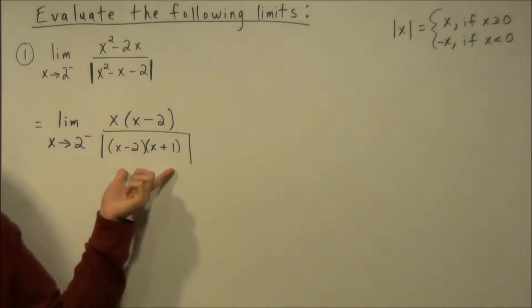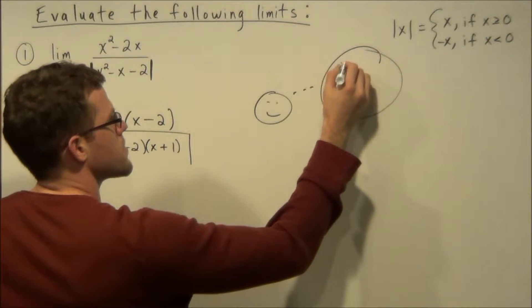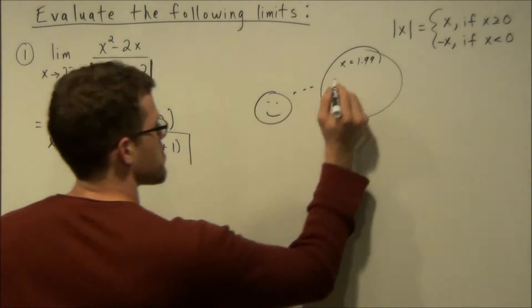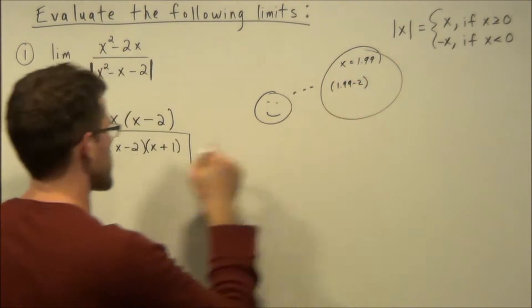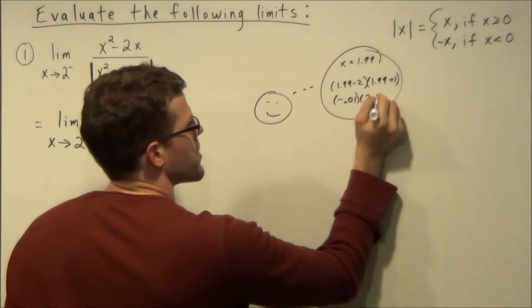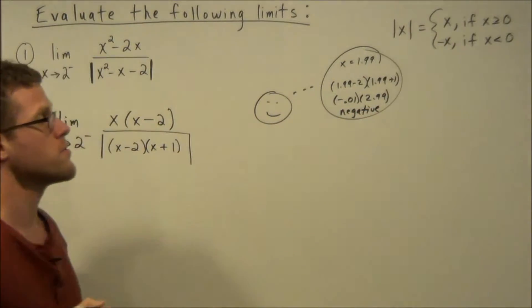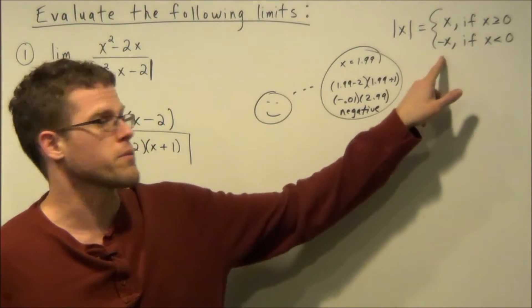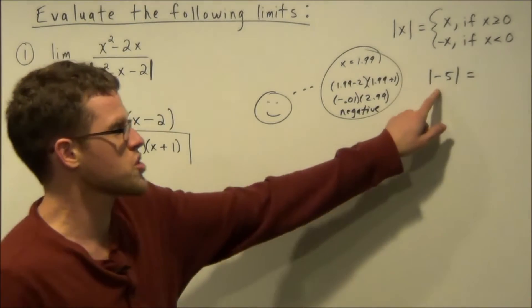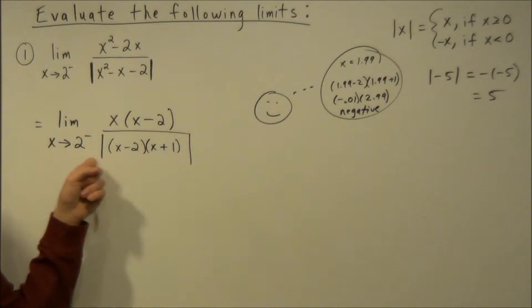Now this is where students tend to get stuck. The trick is when we think of 2 from the left — imagine a number to the left of 2 like 1.99. When evaluating the absolute value part, plug in 1.99 mentally: (x minus 2) gives negative 0.01 and (x plus 1) gives 2.99 — a negative times positive is negative. By the definition of absolute value, when we have a negative input value we change the sign.